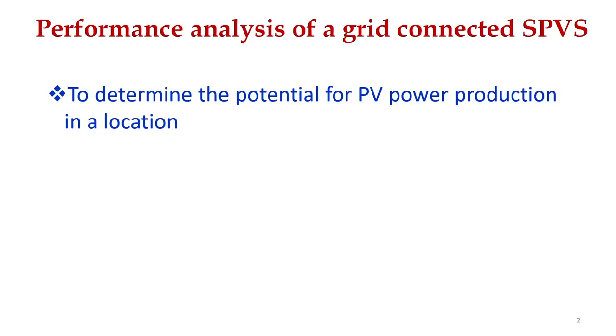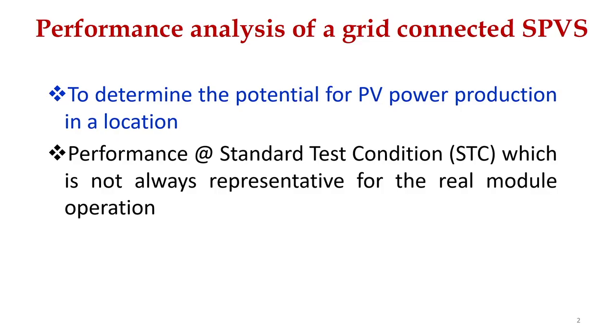The students today will study about the performance of a solar grid-connected PV system. The performance analysis of a grid-connected PV system is very essential to determine the potential for PV power production in a location. Usually, the performance of a solar power plant is investigated under standard test condition, which is not always representative for the real-time operation.